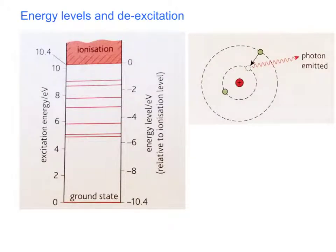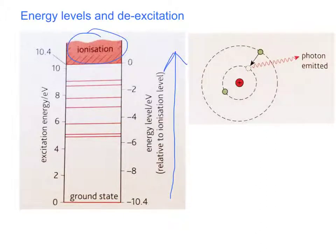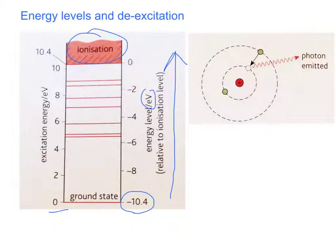Let's have a closer look at the energy levels in an atom. This diagram represents energy levels all the way up to electrons being removed from the atom, which would be ionisation. These energy levels are measured in electron volts. For this particular atom, its lowest energy is minus 10.4 electron volts, which means it would need 10.4 electron volts to remove an electron from the ground state.